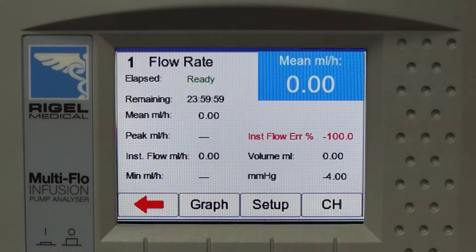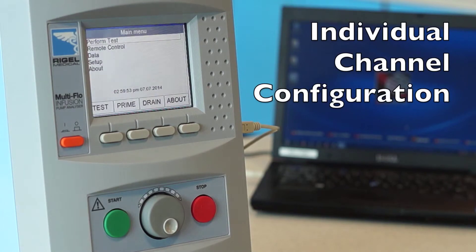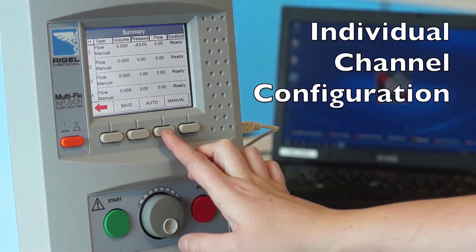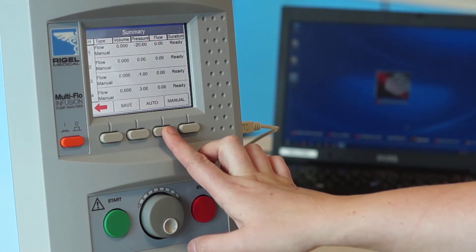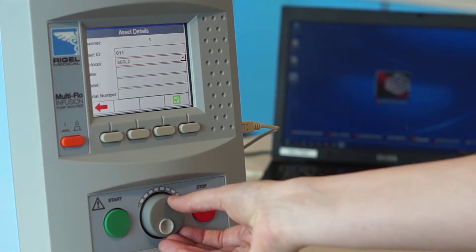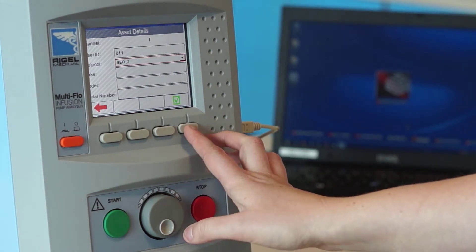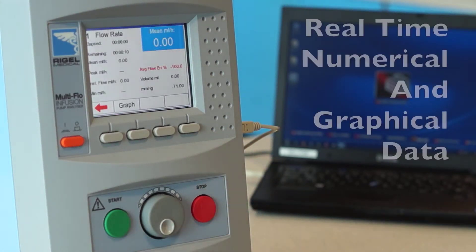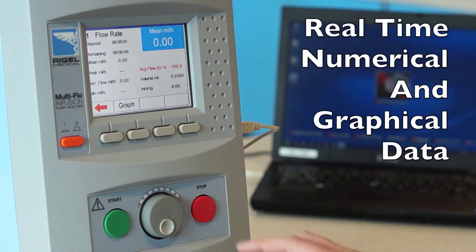The Multiflow allows individual setups of each channel to run tests in either a manual or fully automatic configuration. In automatic mode, user-definable test protocols can be selected and results will be stored against a unique asset number. Users can choose to view real-time flow and volume data in numerical format or on detailed graphs.